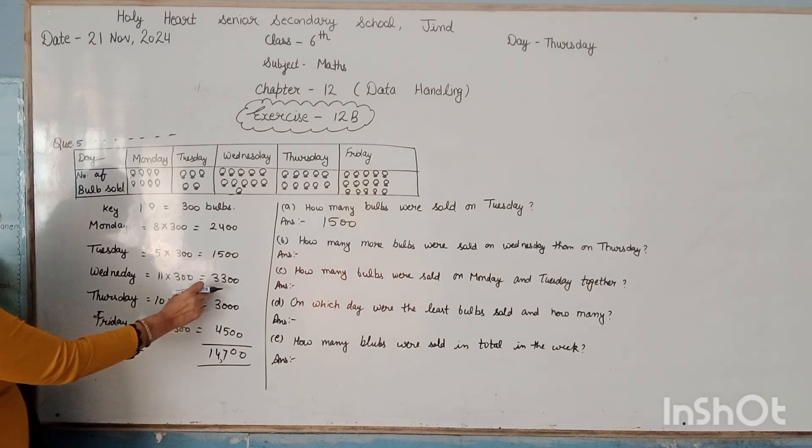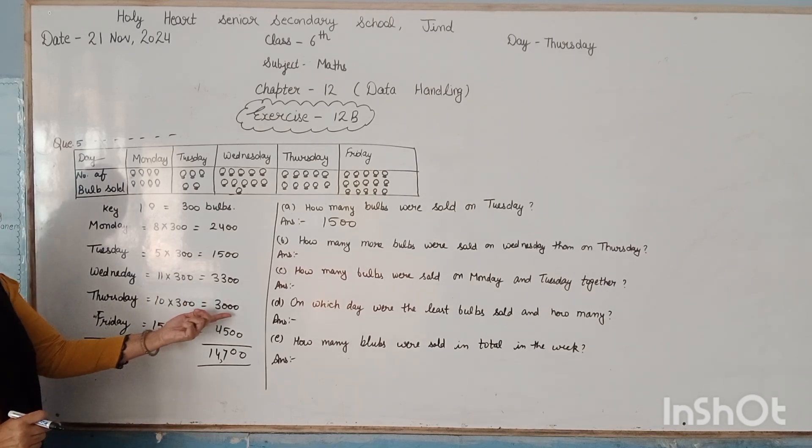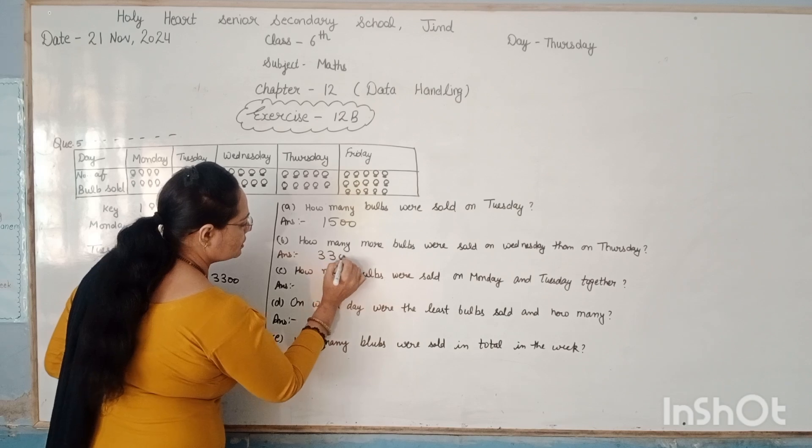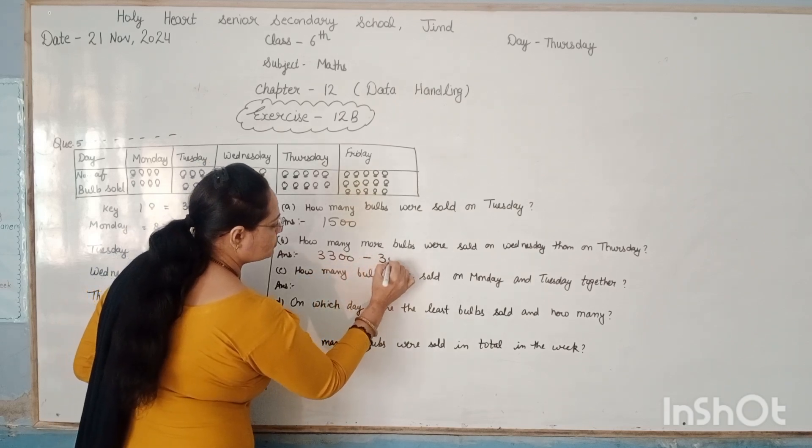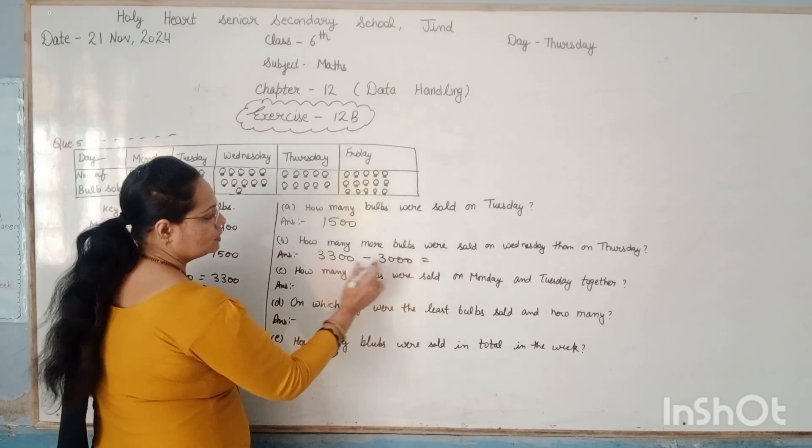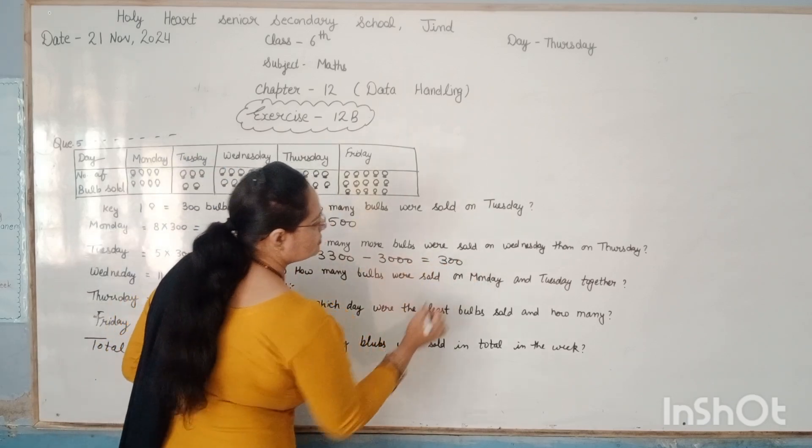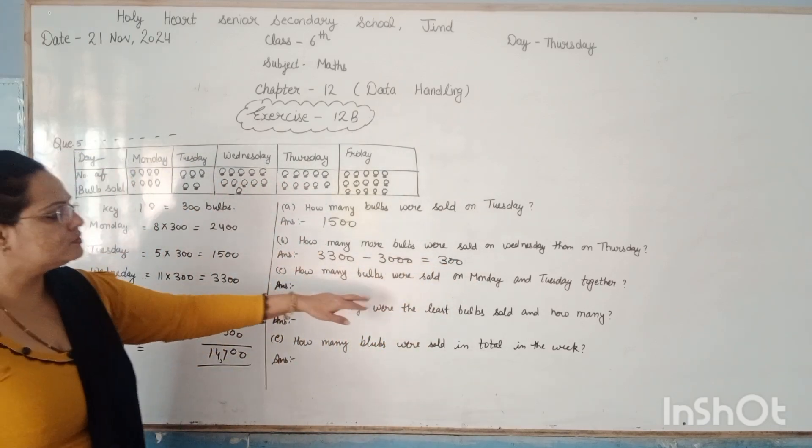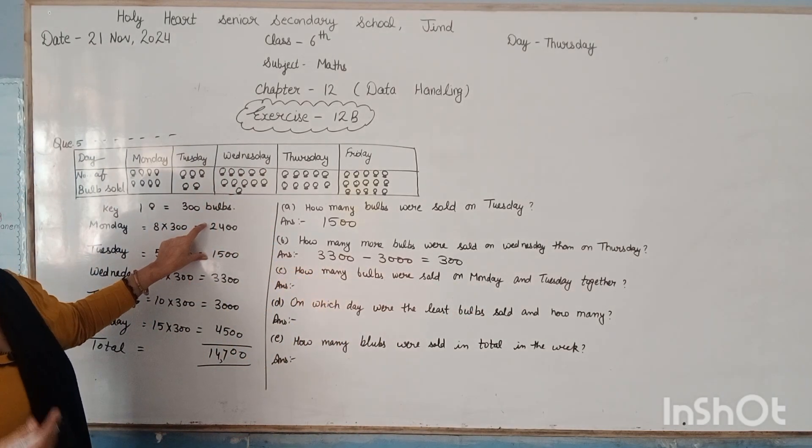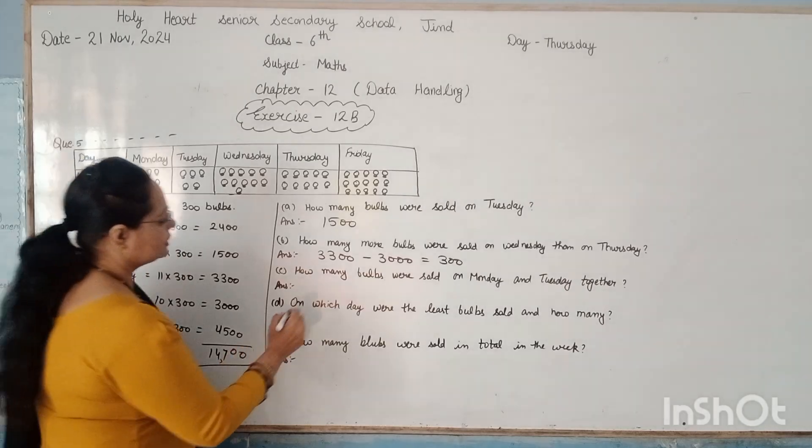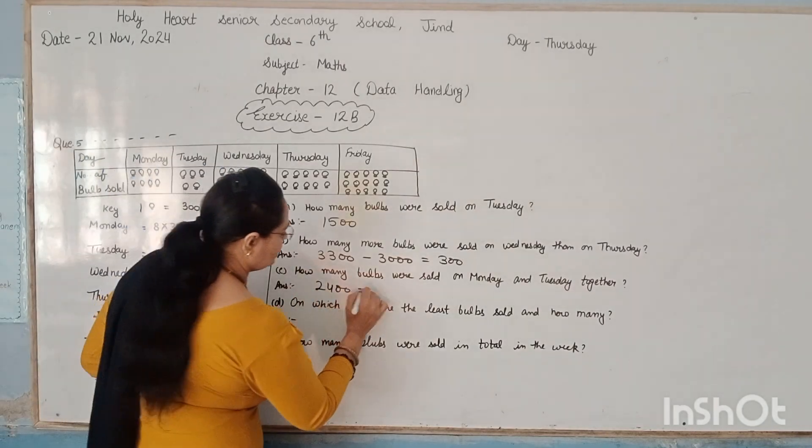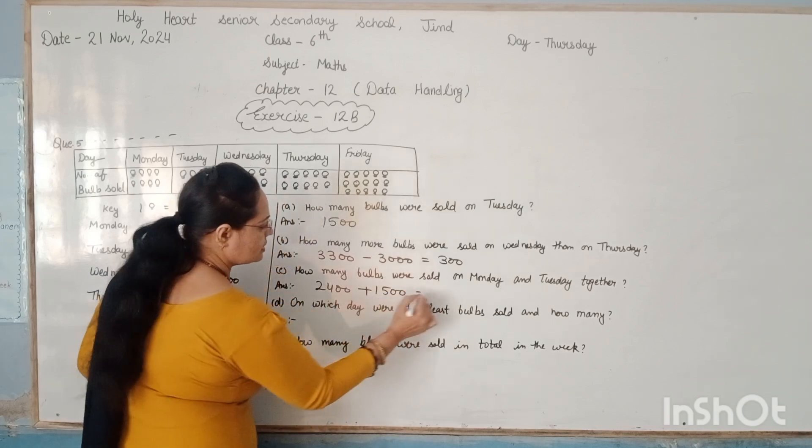On Wednesday, how many bulbs? 3,300, and on Thursday, 3,000. So we have to subtract: 3,300 minus 3,000, that is equal to 300 bulbs. How many bulbs were sold on Monday and Tuesday together? Both days: there are 2,400 plus on Tuesday 1,500, so total of these are 3,900.